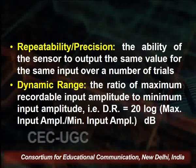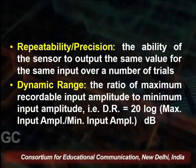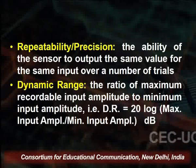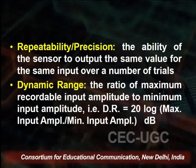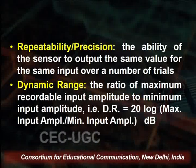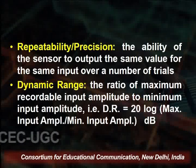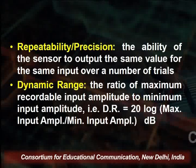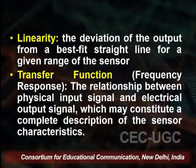Precision is also important for sensors. Next is dynamic range — the range up to which the sensor is working. The dynamic range is the ratio of the maximum recordable input amplitude to the minimum input amplitude. It is expressed as DR = 20 log(maximum input amplitude / minimum input amplitude). Dynamic range is also important for sensor specification.